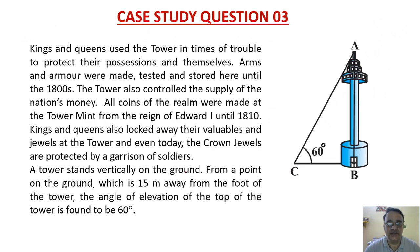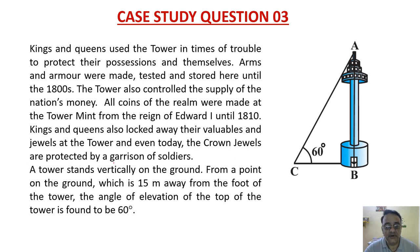Case study question 3: Kings and queens used towers in times of trouble. The Tower also controlled the nation's money supply. A tower stands vertically on the ground; from a point 15 meter away from the foot of the tower, the angle of elevation of the top is 60 degrees.